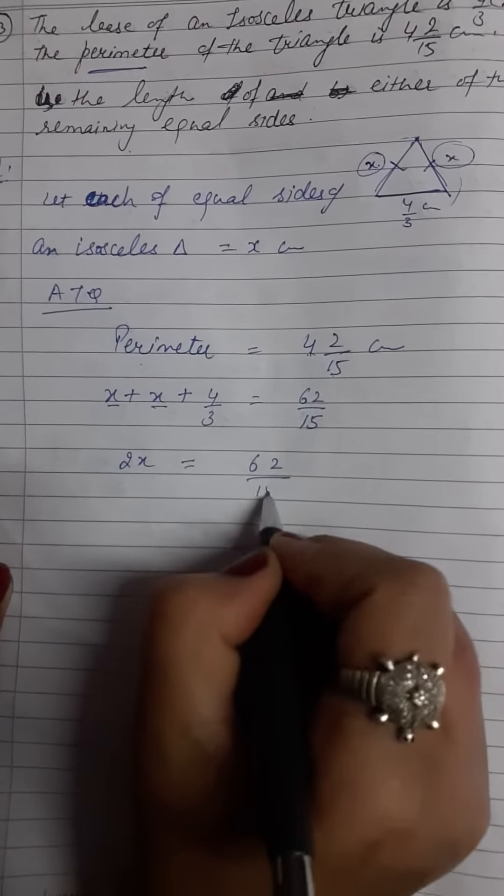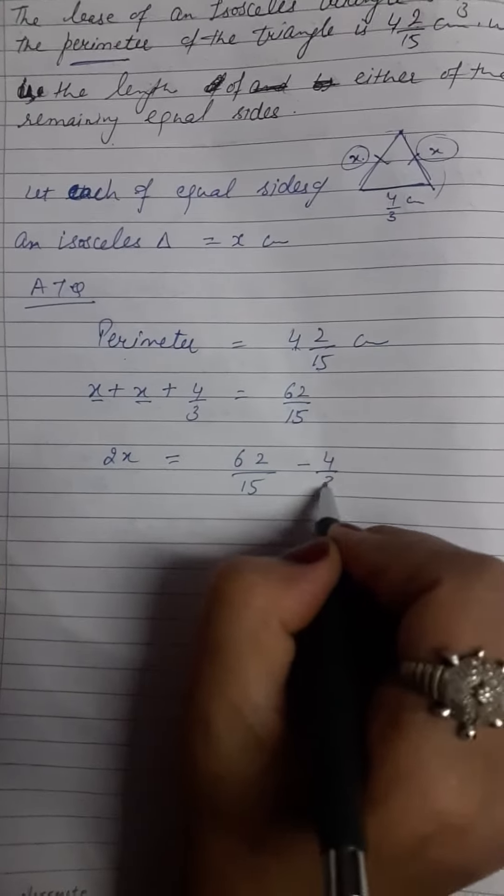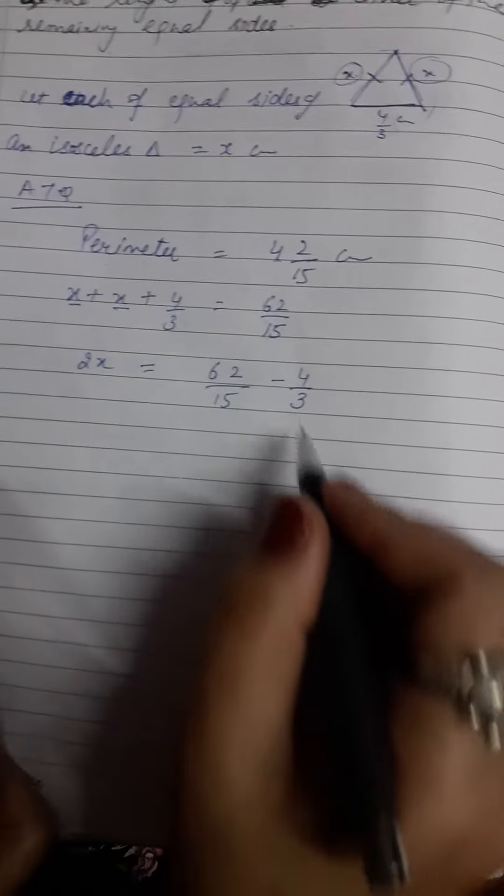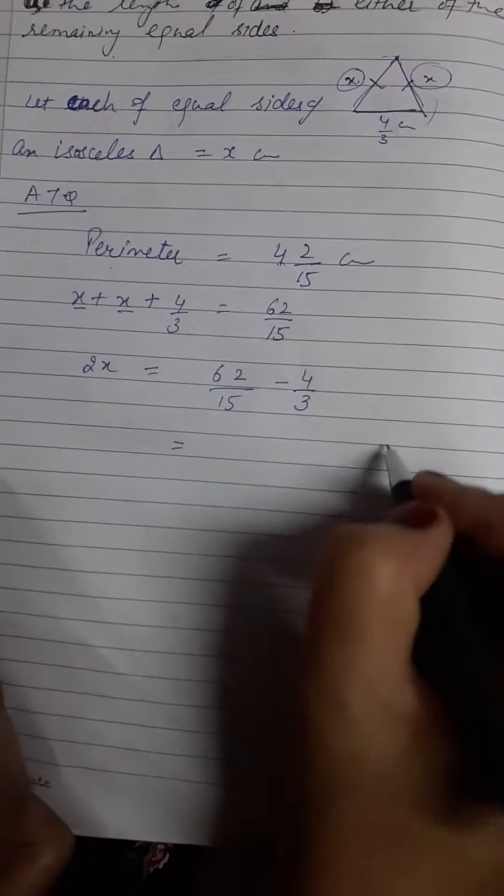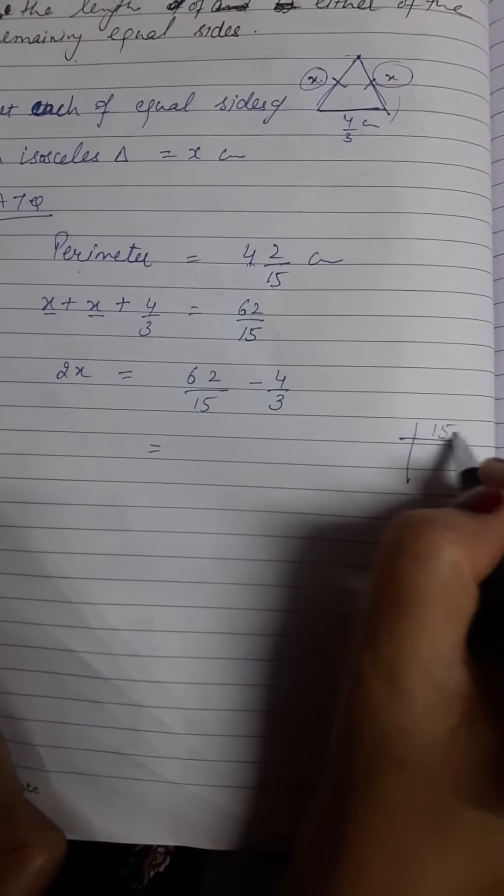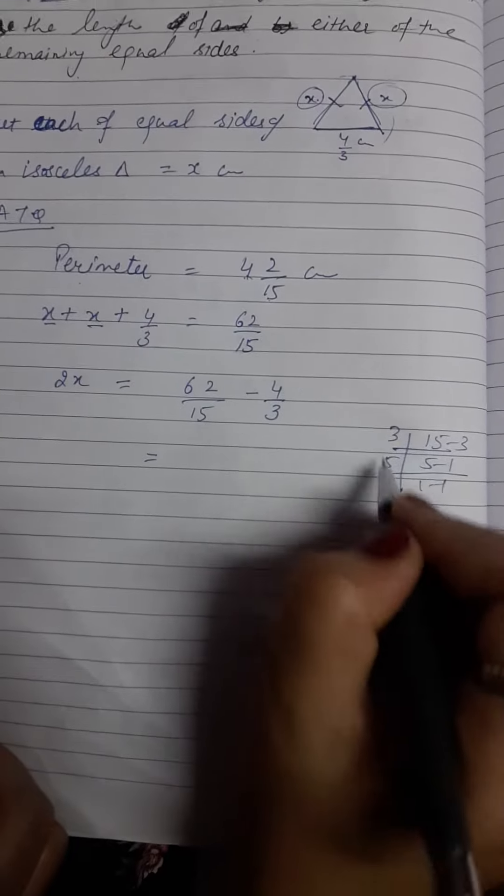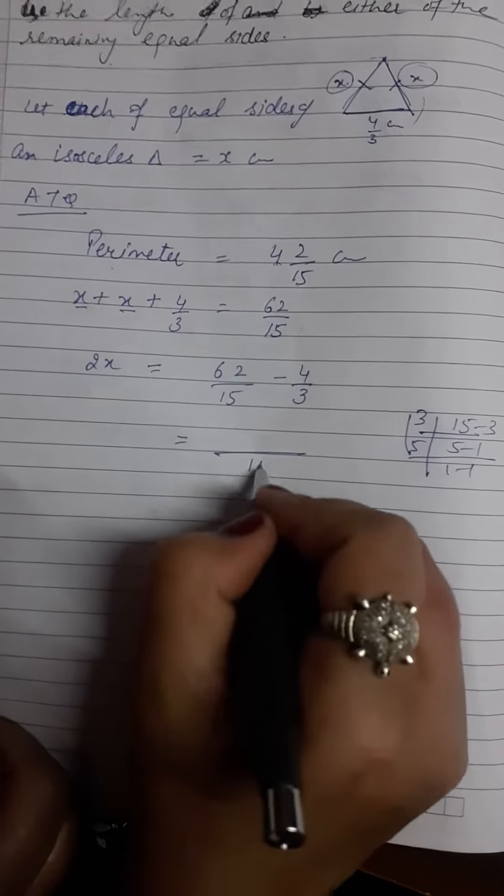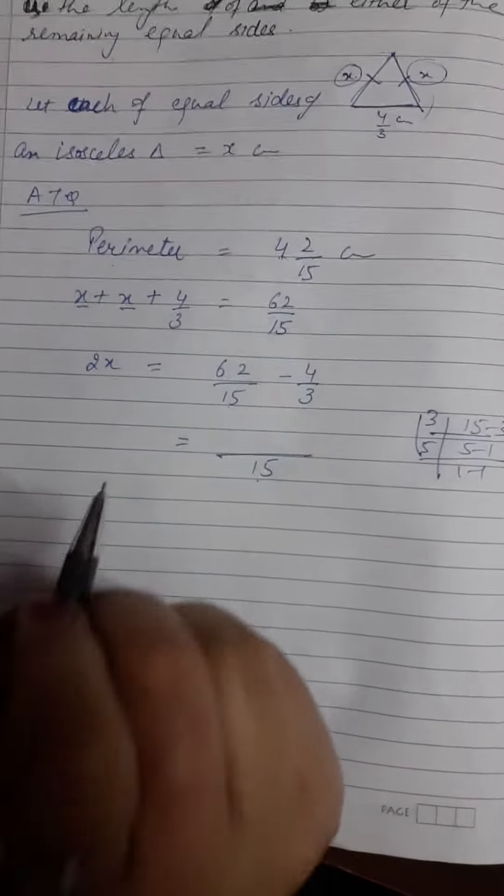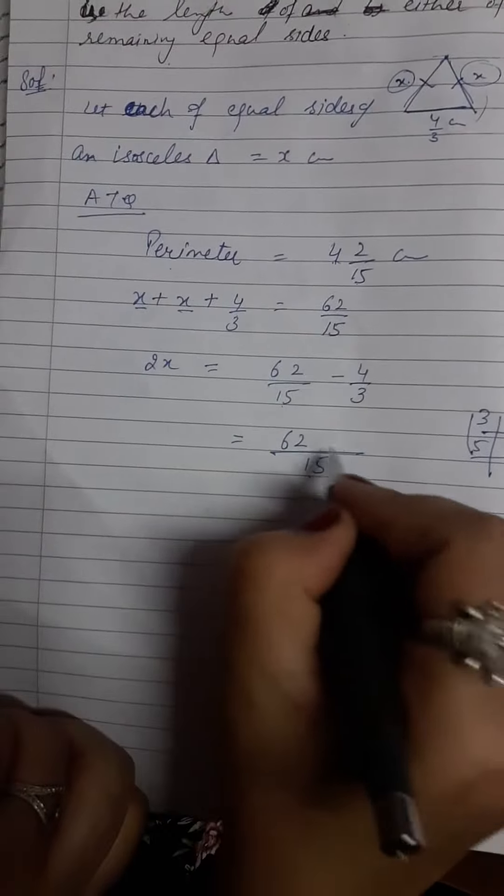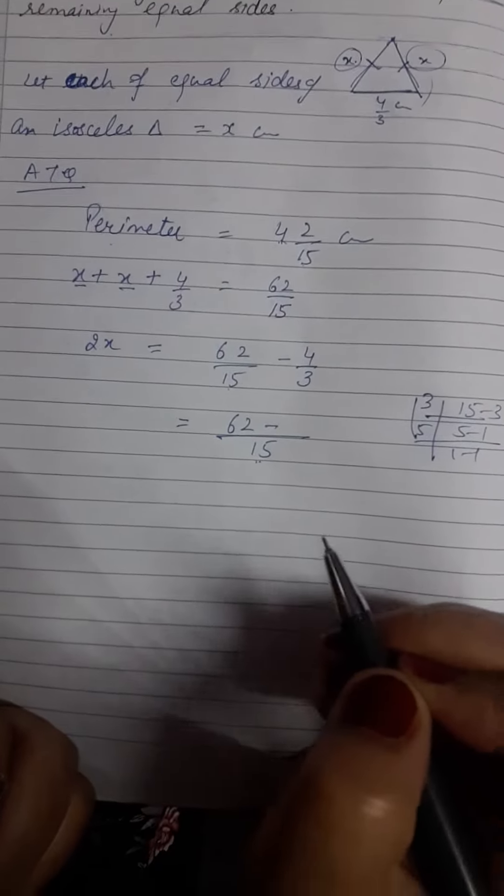Taking to the right hand side, it becomes negative. These are fractions, so we take the LCM. LCM of 15 and 3 is 15. 15 divided by 15 that is 1, 1 times 62 is 62. Minus 15 divided by 3 that is 5.